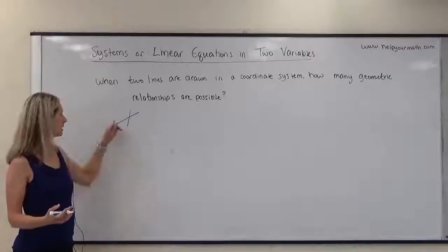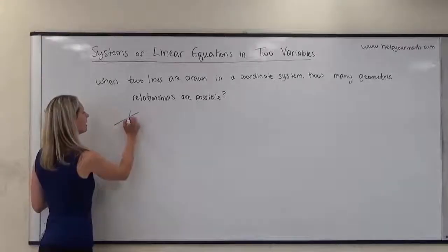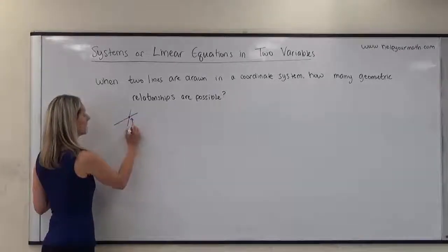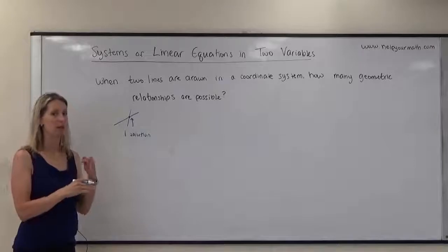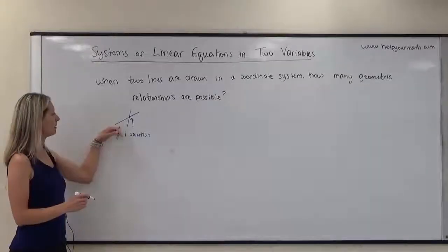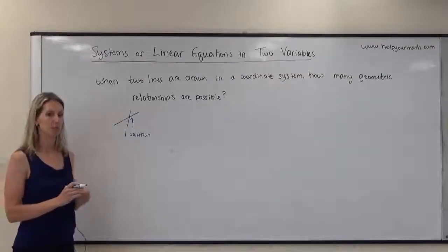When lines intersect like this, they meet right here. We would say that is one solution. We define a solution of a system of equations as that point that's on both lines. So this would be intersecting lines, and they meet at one solution.